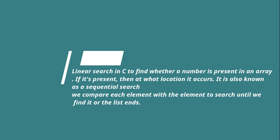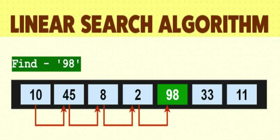Linear search is also known as sequential search. We compare each element with the element to search until we find it or the list ends. For example, suppose we have to find 98. In the first position of the array we have 10, so 98 is not there. Then we go to 45, 8, 2, and then we get 98 — and then our linear search algorithm is complete.